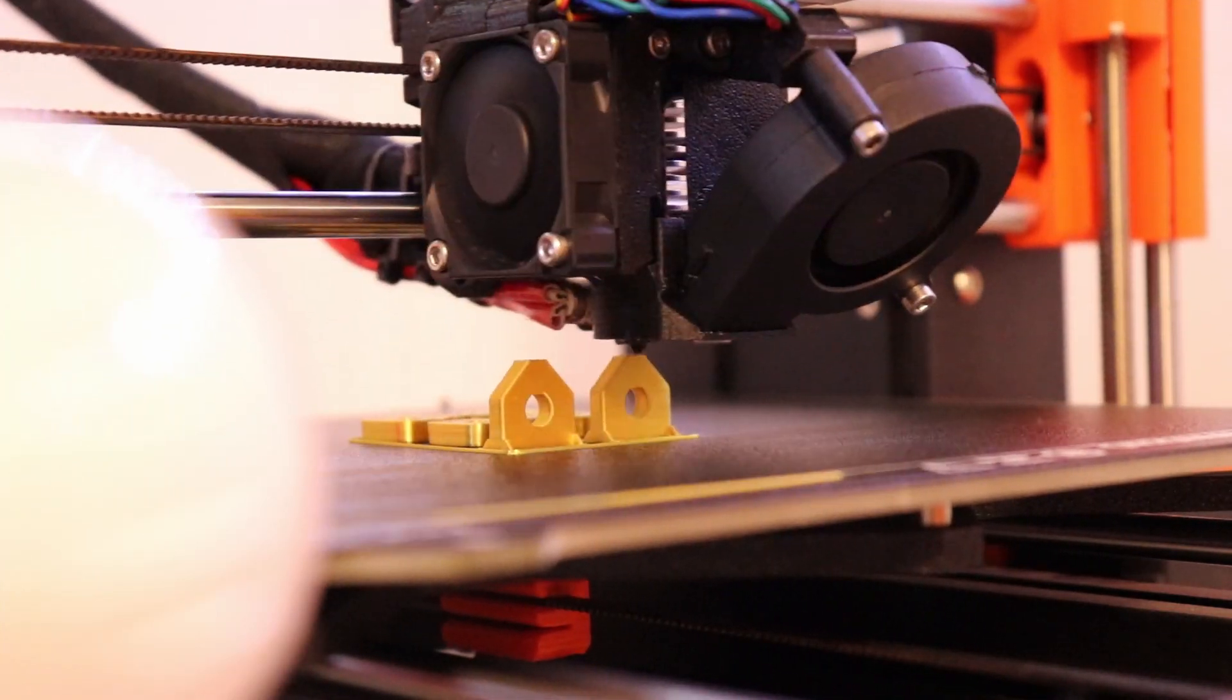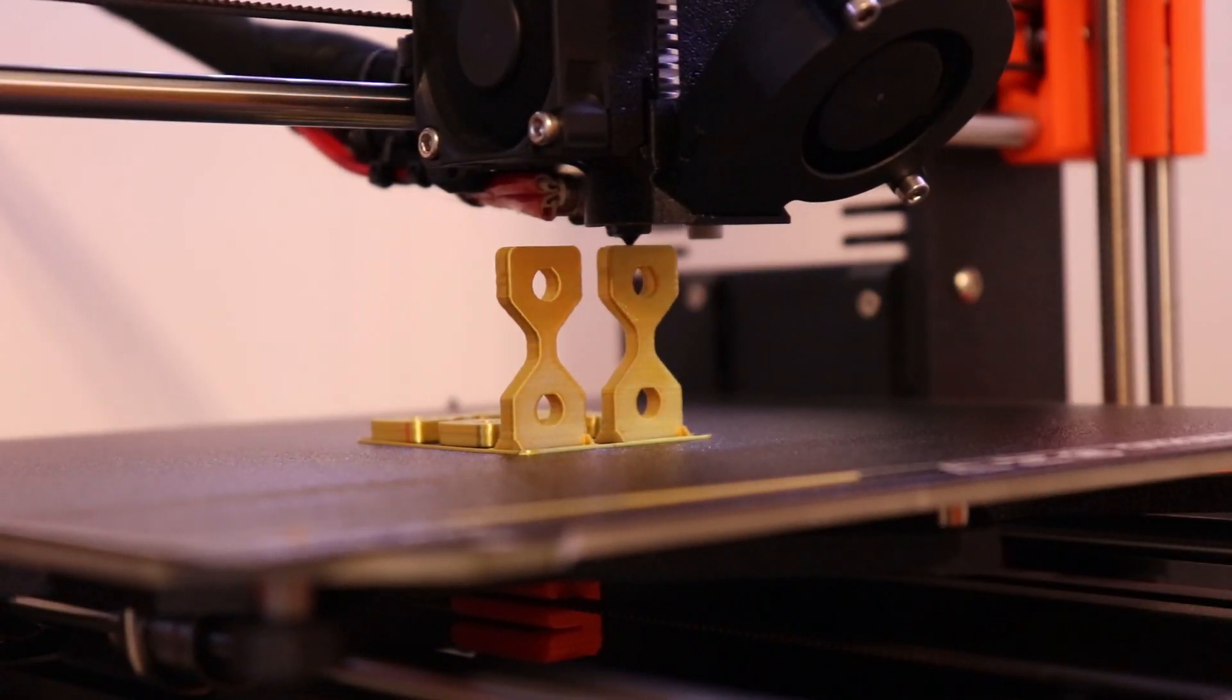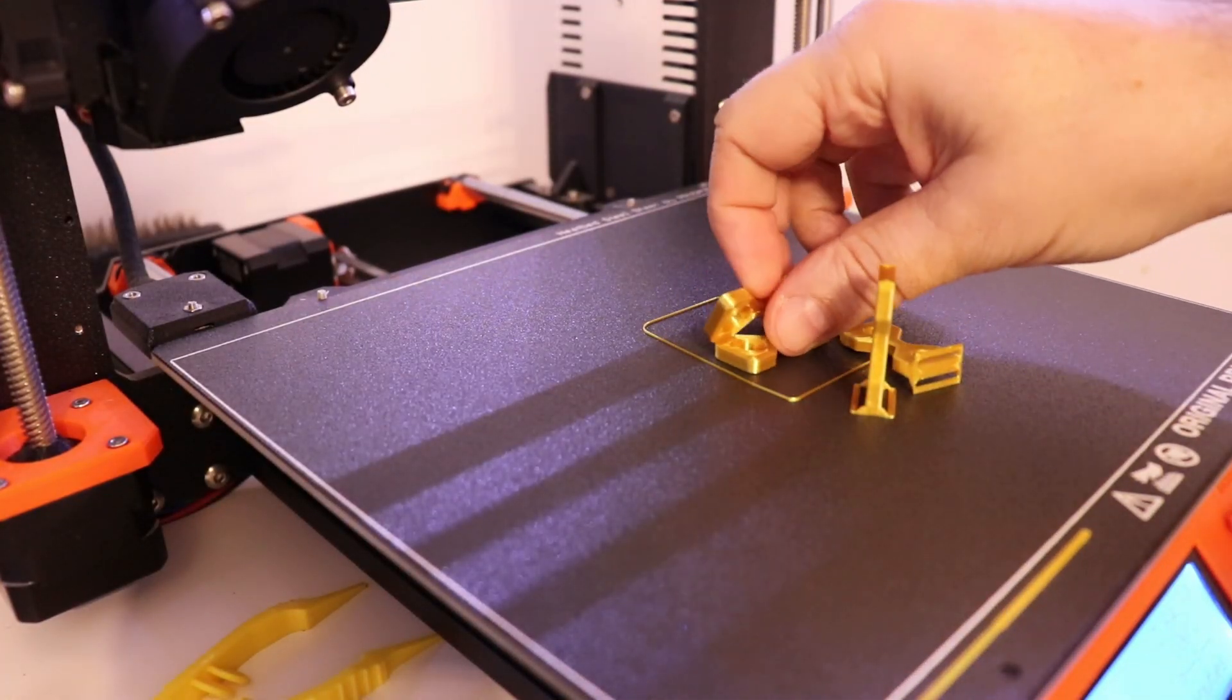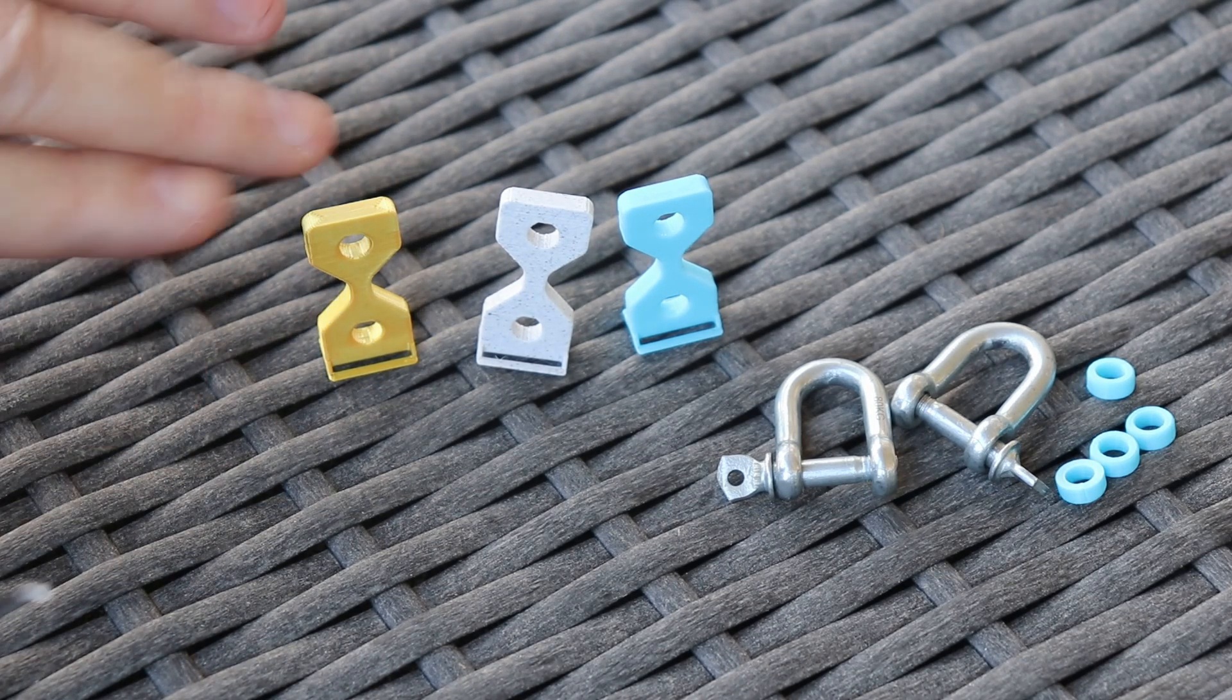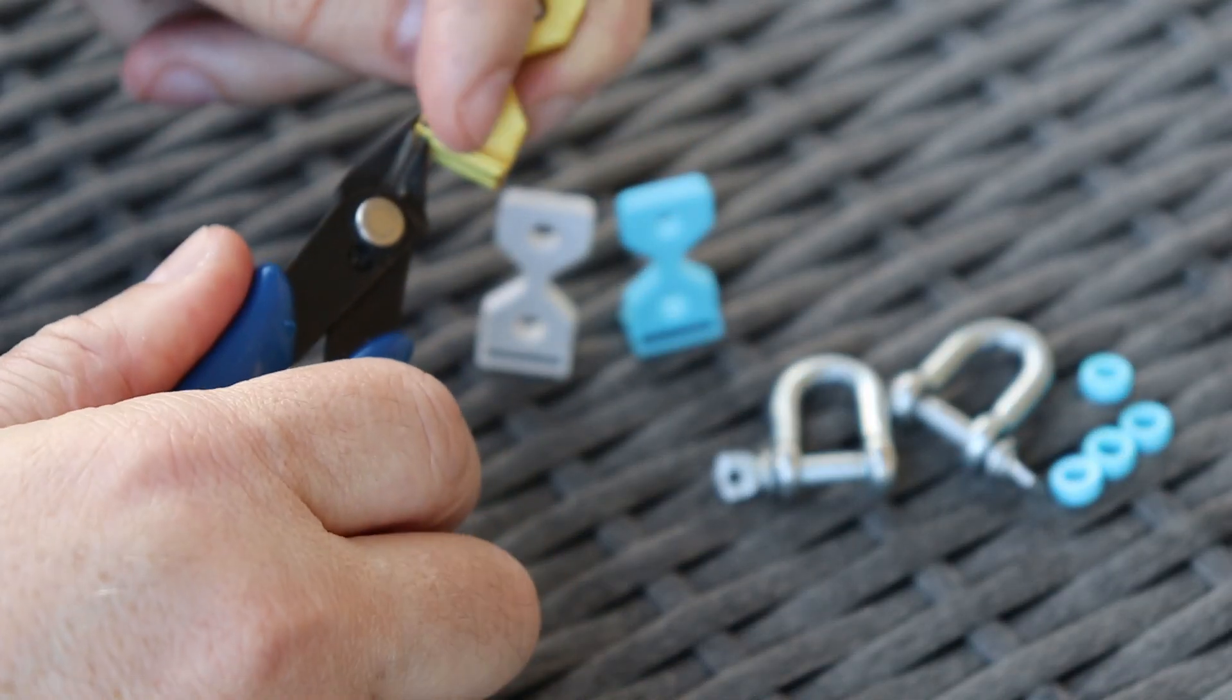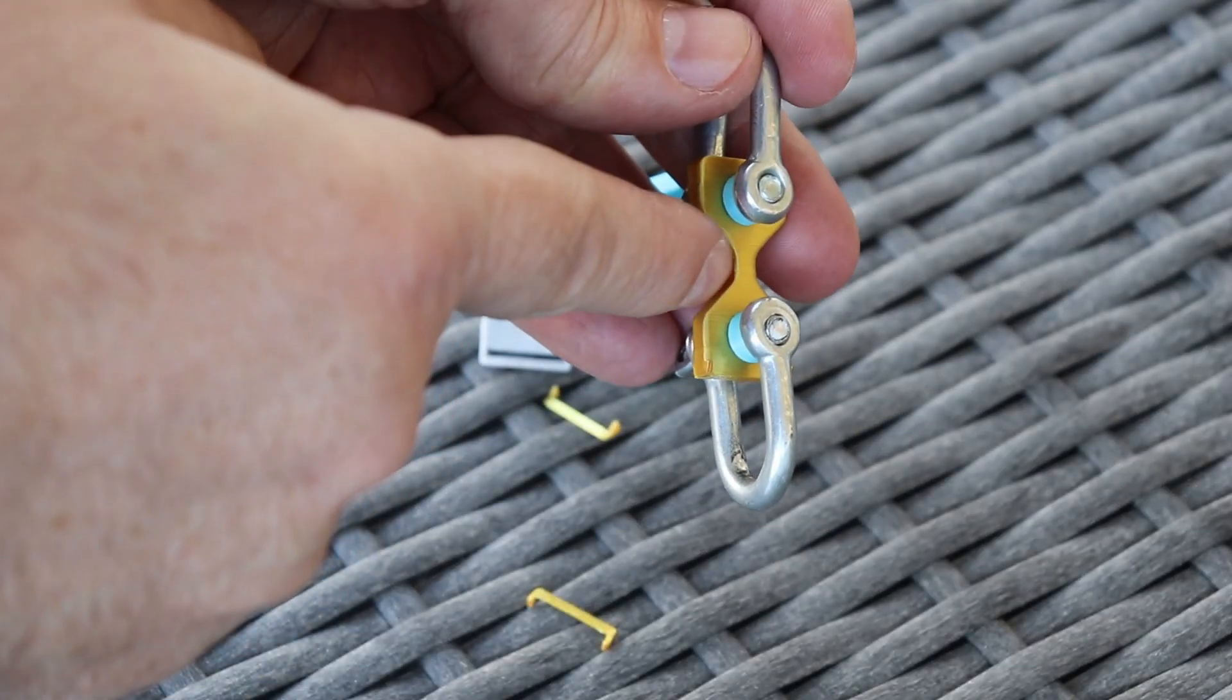And also I was very curious about that layer adhesion, so I printed some specimens in horizontal and vertical position. So I want to do some tensile tests with them. These are my test specimens printed in vertical position to check the layer adhesion. Only I have to cut these small supports. 4x4 mm here.